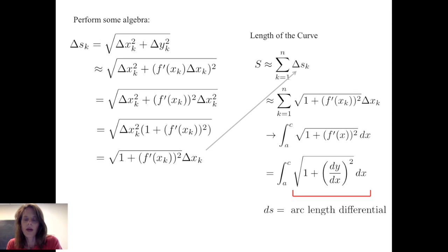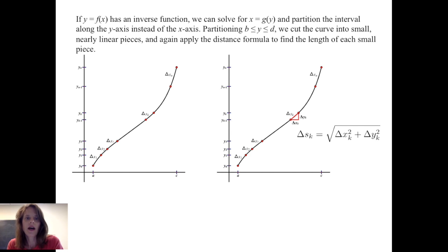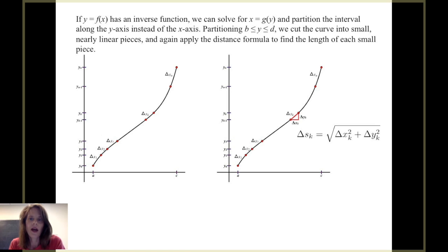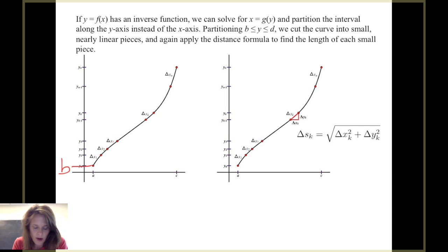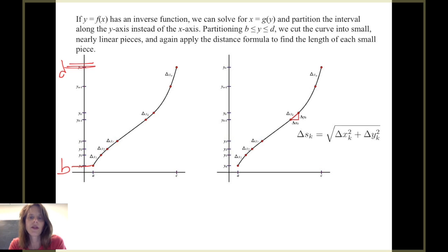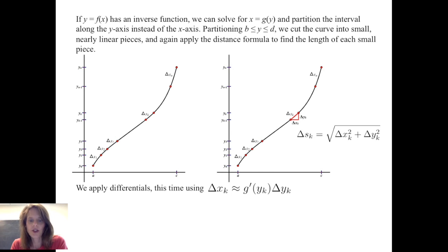This expression under the integral sign is also called the arc length differential, denoted ds. Suppose the function f has an inverse, and we solve for x as a function of y: x = g(y), partitioning the interval along the y-axis instead. Suppose the endpoints are b and d, and we partition the interval from b to d, cutting the curve into small, nearly linear pieces, and again apply the distance formula: Δs_k ≈ √(Δx_k² + Δy_k²). This time we apply differentials as Δx_k ≈ g′(y_k) · Δy_k.